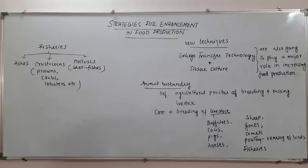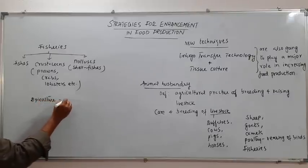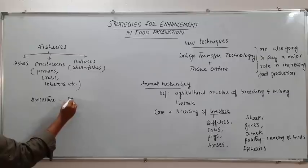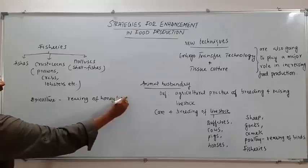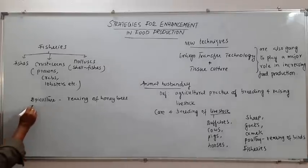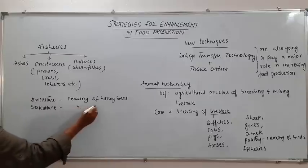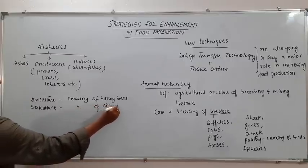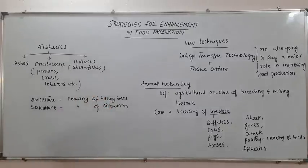We also include under animal husbandry apiculture, which means the rearing of honeybees — I will talk about this in detail in coming sessions. Then we also have sericulture, which includes the rearing of silkworms. So the rearing of honeybees and silkworms also comes under animal husbandry.